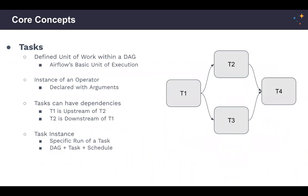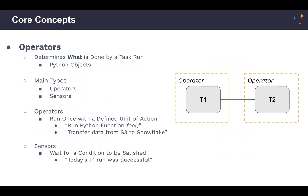Drilling down one level, a task is the unit of work within your DAG — Airflow's basic unit of execution. You can define dependencies between tasks: upstream and downstream, as shown in the example. When you actually run your DAG, you'll get a task instance for each task — that's a specific run of a given task at a point in time. An operator then determines what gets done by each task; think of it as a wrapper around each task that defines how the task runs and abstracts away a lot of code you'd otherwise have to write yourself.